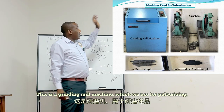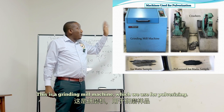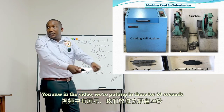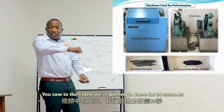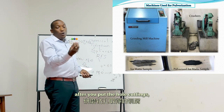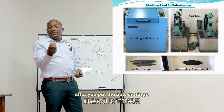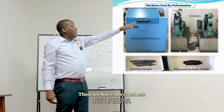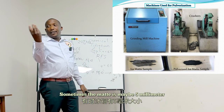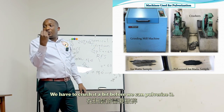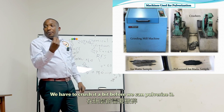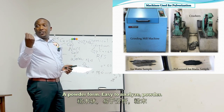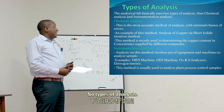These are some of the machines we use for sample preparation. The grinding mill machine is used for pulverizing — as seen in the video, we put material in for 20 seconds and it comes out as powder. We also have crushers: sometimes material is around 5mm, so we crush it before pulverizing to powder form, which is easier to analyze.